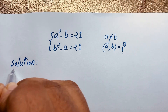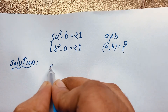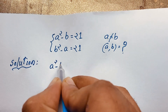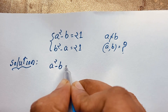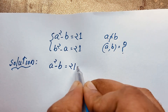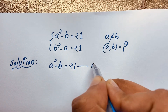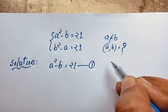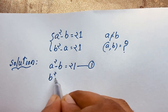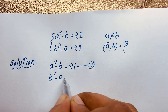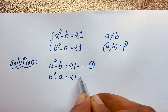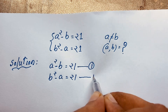Our question is: a squared minus b is equal to 21 — this is our first equation. And b squared minus a is equal to 21 — this is our second equation.